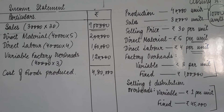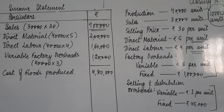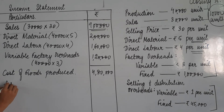Ab ismein as per the format, humne do cheezein adjust karni hoti hain to get cost of goods sold: opening stock of finished goods aur closing stock of finished goods. As per the question, opening stock ki koi information nahi di gayi hai, so we are assuming opening stock is nil. Difference of production and sales — 40,000 minus 30,000 — is your closing stock of 10,000 units. Closing stock ko subtract kiya jayega kyunki is stock ko hum agle saal bechenge.